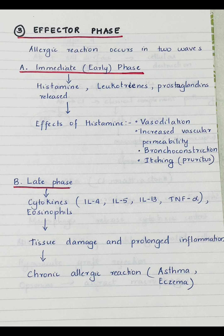The effector phase is the last phase where the allergic reaction occurs, and it happens in two waves. The immediate or early phase occurs within minutes. During this phase, mediators such as histamine, leukotrienes, and prostaglandins are released. Effects of histamine include vasodilation, resulting in redness and swelling; increased vascular permeability causing fluid leakage and edema; bronchoconstriction causing wheezing and difficulty breathing; and itching or pruritus caused by stimulation of nerve endings in the skin.